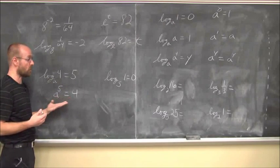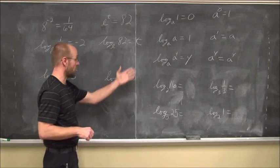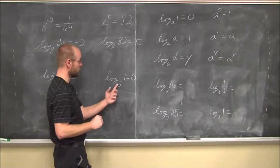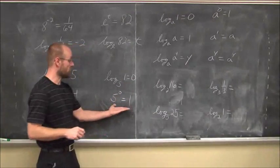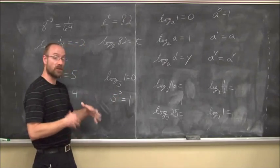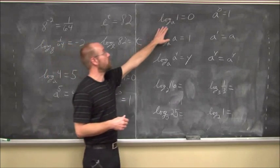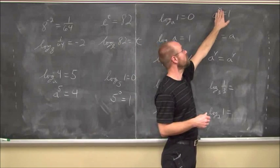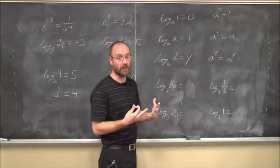If we want to write this as an exponential equation, the base is 5, the power is 0, and that equals 1. This is a true statement: 5 to the 0 power equals 1, because anything to the 0 power is 1. Which means in turn, the log — regardless of the base — of 1 is always equal to 0. The property says: log base A of 1 equals 0, because A to the 0 power equals 1. Anything to the 0 power equals 1. This is a property of logarithms essentially the same as our exponents.